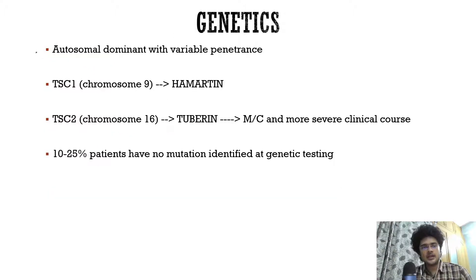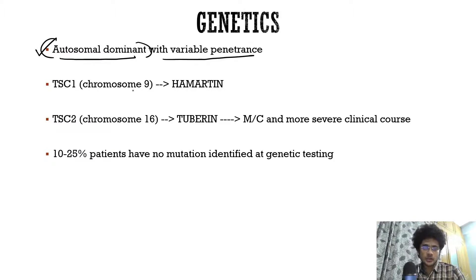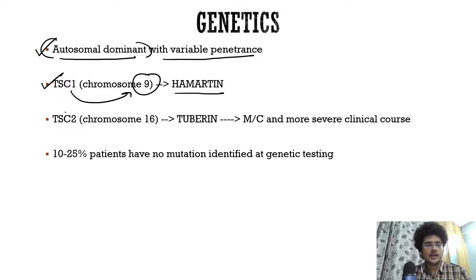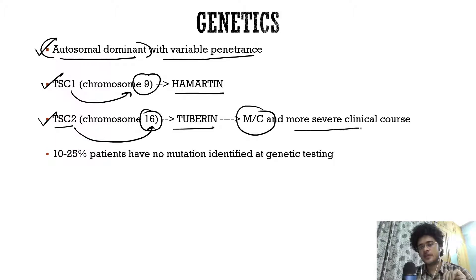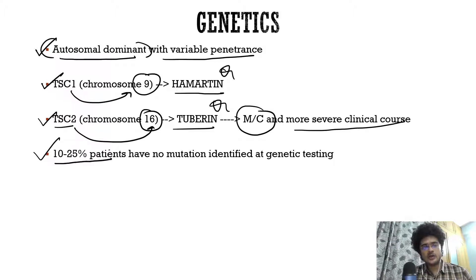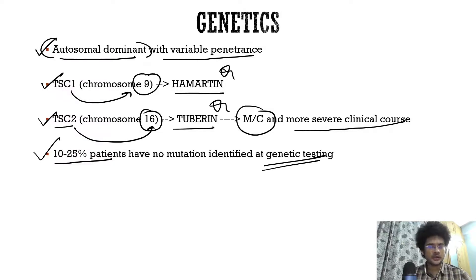Regarding genetics, inheritance is autosomal dominant with variable penetrance. The two important genes are TSC1 on chromosome 9, coding for hamartin, and TSC2 on chromosome 16, coding for tuberin. TSC2 is the most commonly mutated and has a more severe clinical course. Importantly, 10 to 25% of patients will have normal genetic testing — a normal result does not rule out tuberous sclerosis.